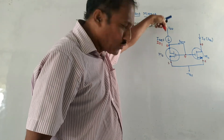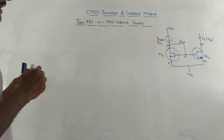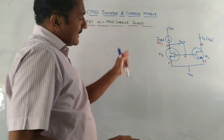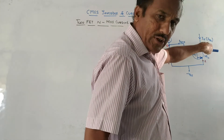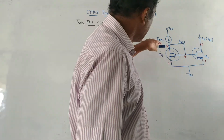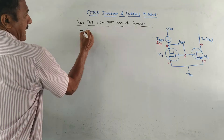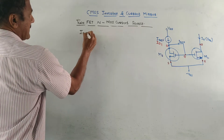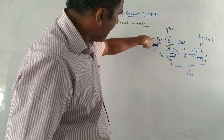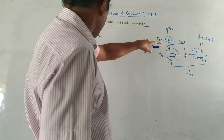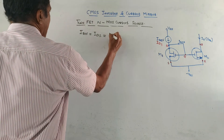Now let us derive the relationship. We have to prove that this circuit acts as a basic current source — that the output current I0 is the same as the reference current I_reference. I_reference is the same as ID1. We have the standard formula for ID1, which is Kn1 times (VGS minus Vtn1) squared.